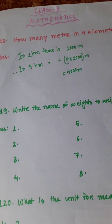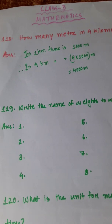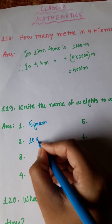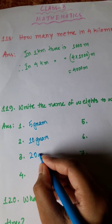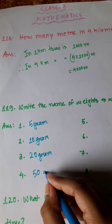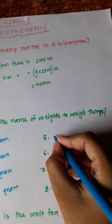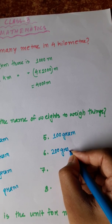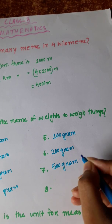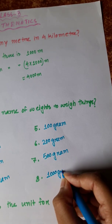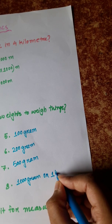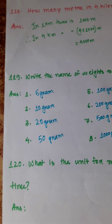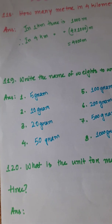Number 119: Write the names of weights used to weigh things. 5 gram, 10 gram, 20 gram, 50 gram, 100 gram, 200 gram, 500 gram, and 1000 gram or 1 kilogram (kg). Number 120, the last one: What is the unit for measurement of time? The unit for measurement of time is second.